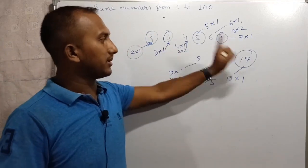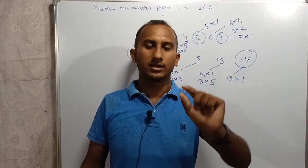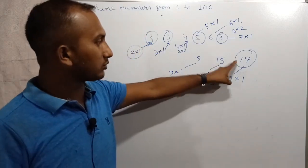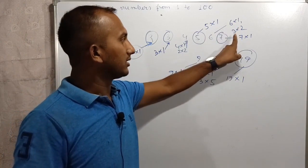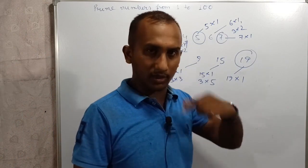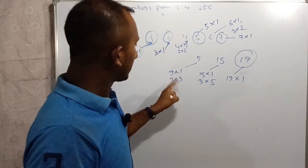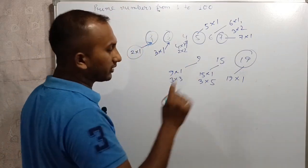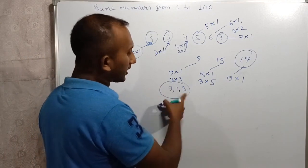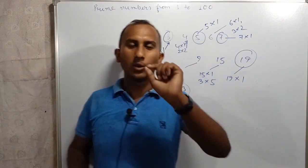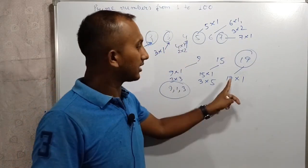2, 3, 5, 7, 19 — these are prime numbers which have only two factors. Those numbers are prime. 19 and 1, 5 and 1. But 6 has factors: 6 and 1, 3 and 2. What is the factor of 9? 9, 1, 3, 3. Which number has more than two factors? That is the composite number.